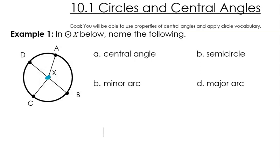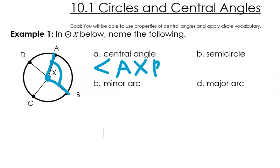A central angle is anything that has X as its center. So if I pick this as my central angle, this angle here — that is angle A, X, B. Remember with angles, you always use capital letters.